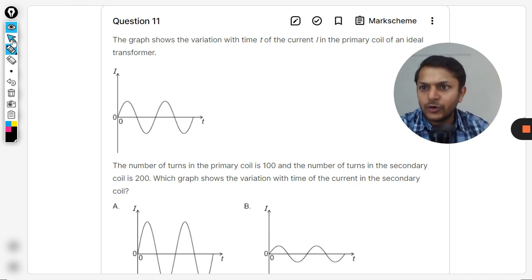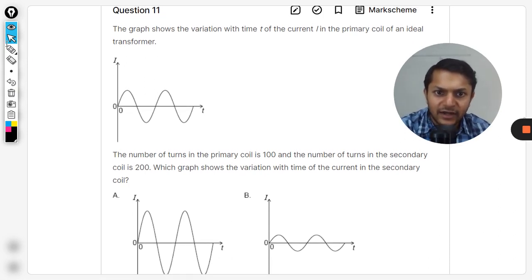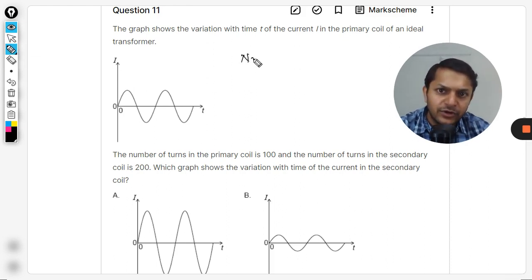There is no flux loss. The number of turns in the primary coil is 100 and the number of turns in the secondary coil is 200. So the transformer ratio...